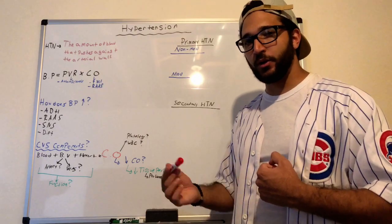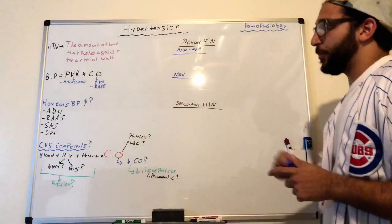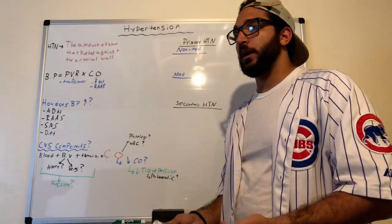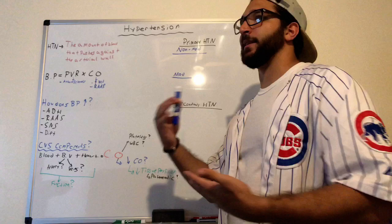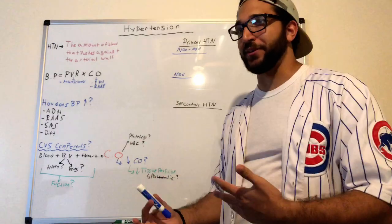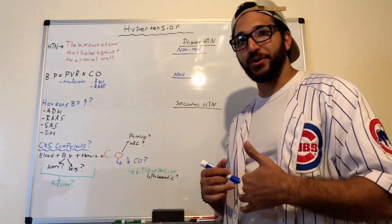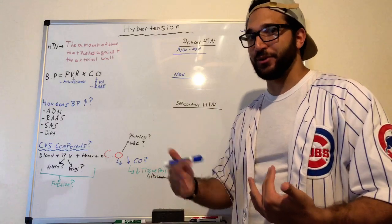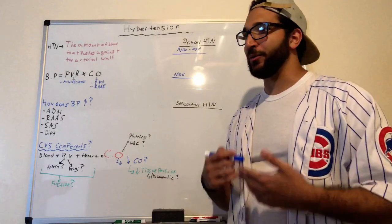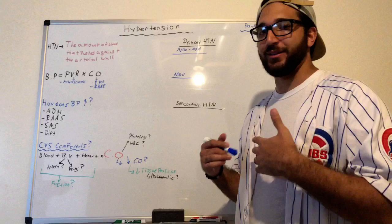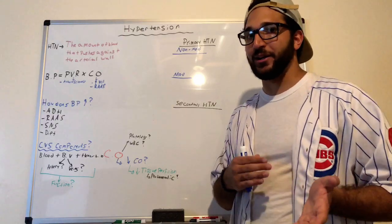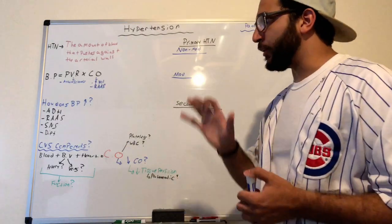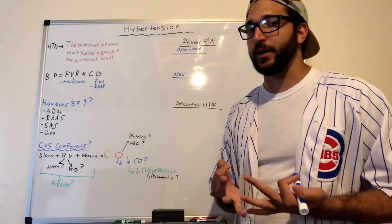A poor diet — like eating a fatty, salty cheeseburger frequently — retains sodium, and wherever sodium goes, water follows. Over time this increases your blood pressure. High cholesterol content, if not regulated, can lead to atherosclerosis. Blood pressure can also increase through three compensatory mechanisms our body goes through.